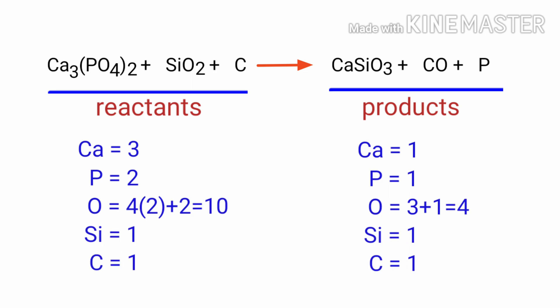If you look at this equation, the equation is not balanced. On the reactants side, there are 3 calcium atoms, 2 phosphorus atoms, 10 oxygen atoms, 1 silicon atom, and 1 carbon atom present.